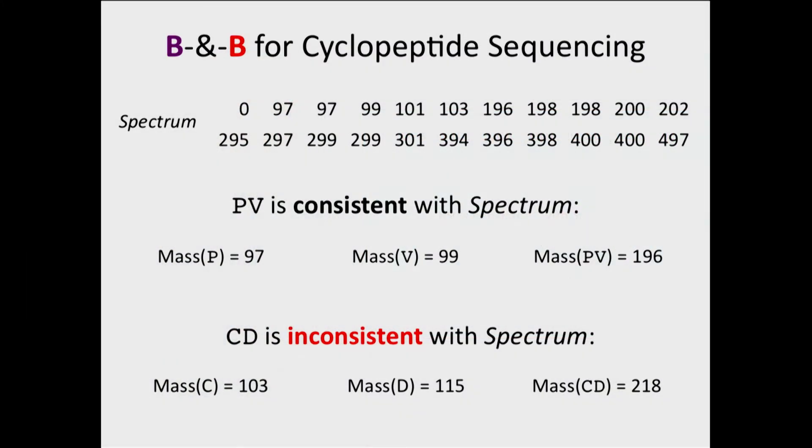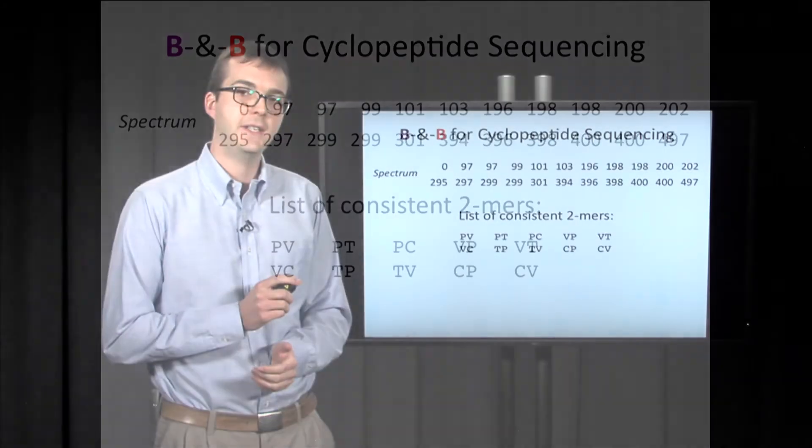CD is one that we actually created in the expand step, but it's inconsistent with this spectrum. So although 103, the mass of C, is present, is detected, 115 and 218, the mass of D and the mass of the entire two-mer peptide CD, they're not found. You can't find 115 or 218 in this spectrum. So we want to exclude CD.